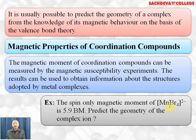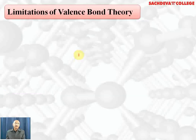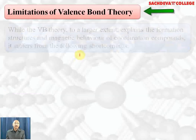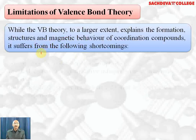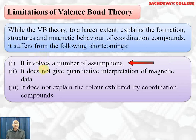Since there are 5 unpaired electrons, hybridization will be sp³ and the complex will be tetrahedral. Limitations of Valence Bond Theory: while VBT explains to a large extent the formation, structure, and magnetic behavior of coordination complexes, it suffers from several shortcomings.